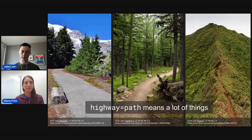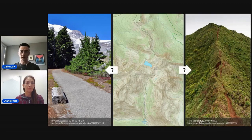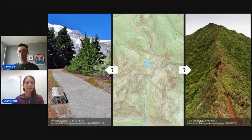And in OSM, similarly, the term highway=path — which is the tag we use to describe trails — means all of these things. It can mean a trail like the one on the left or the one on the right and everything in between. This presents a challenge for maps based on OpenStreetMap data, because if a map draws a line where a way is tagged highway=path, the user won't necessarily know what they'll find on the ground at that location.